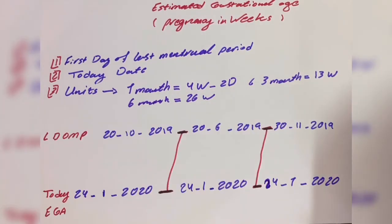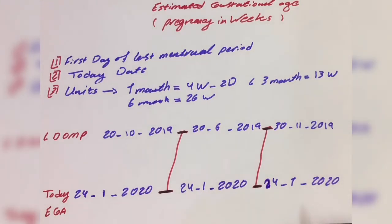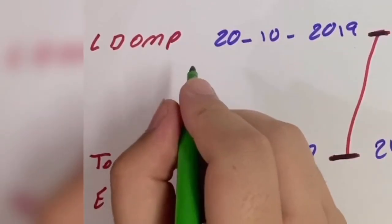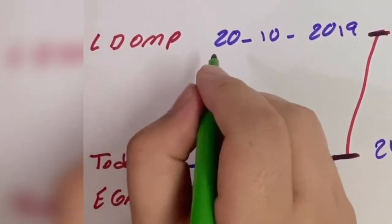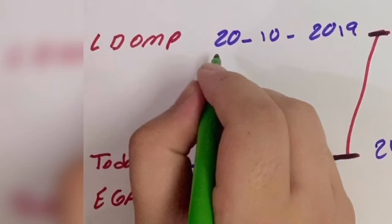We will use some random dates to calculate the estimated gestational age. We will use the first day of the last menstrual period and today's date. Today's date is the 24th of month 1, year 2020. The first day of the last menstrual period is day 20, month 10, year 2019.